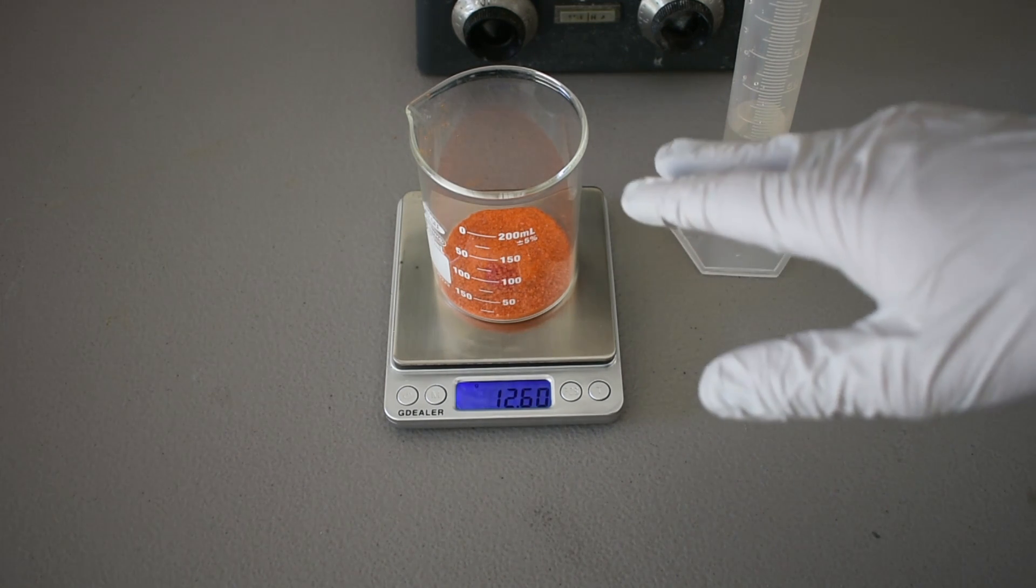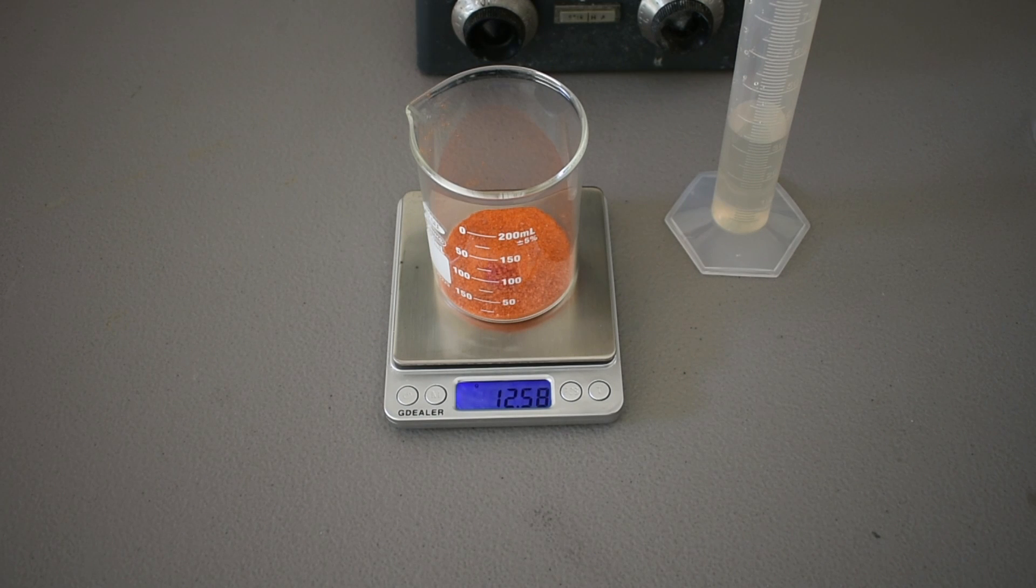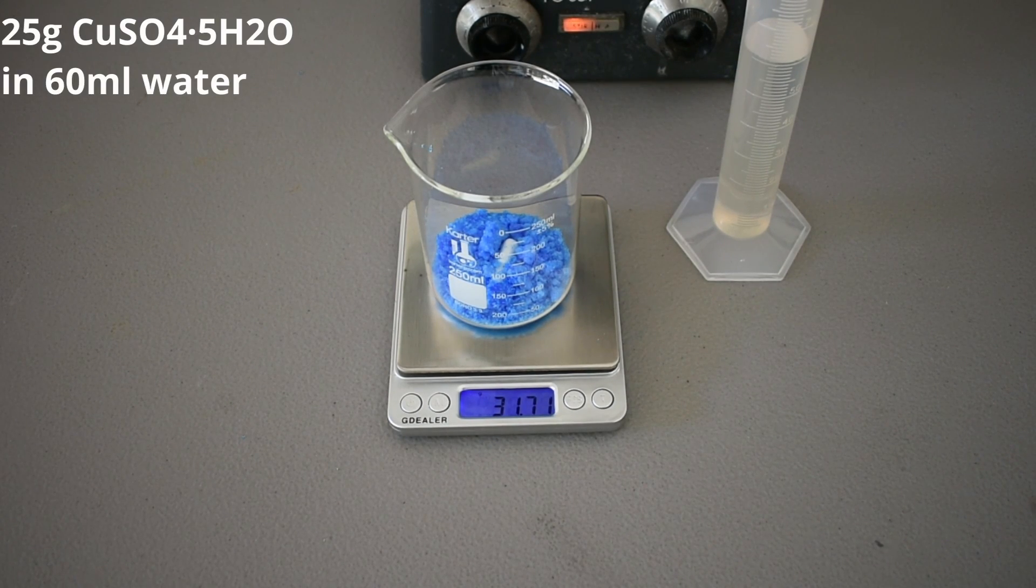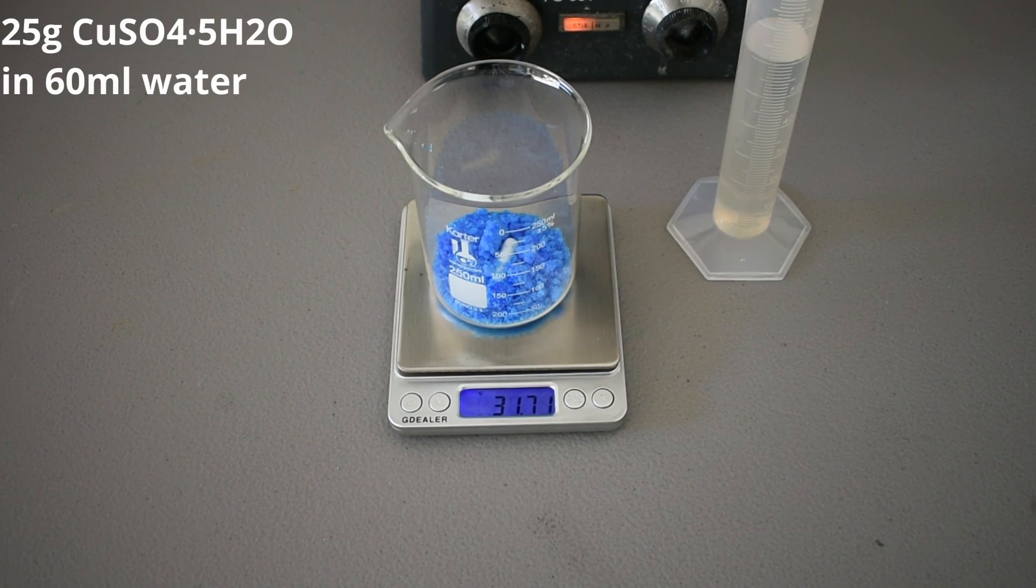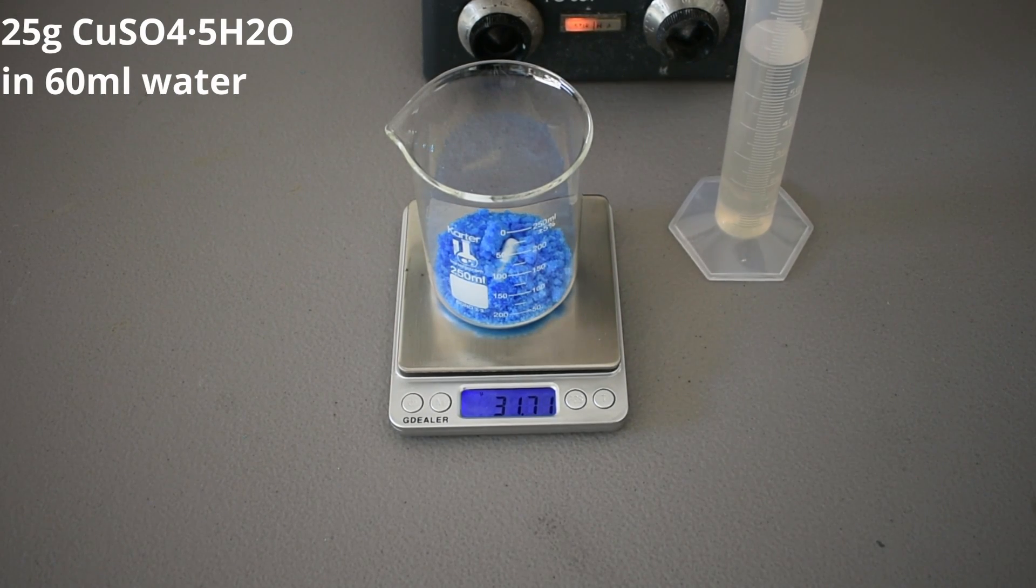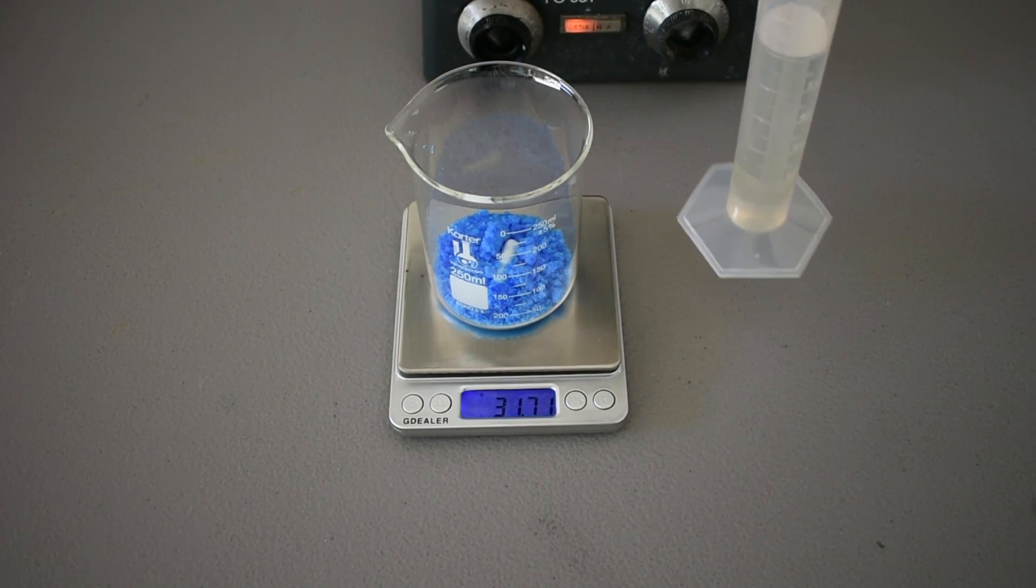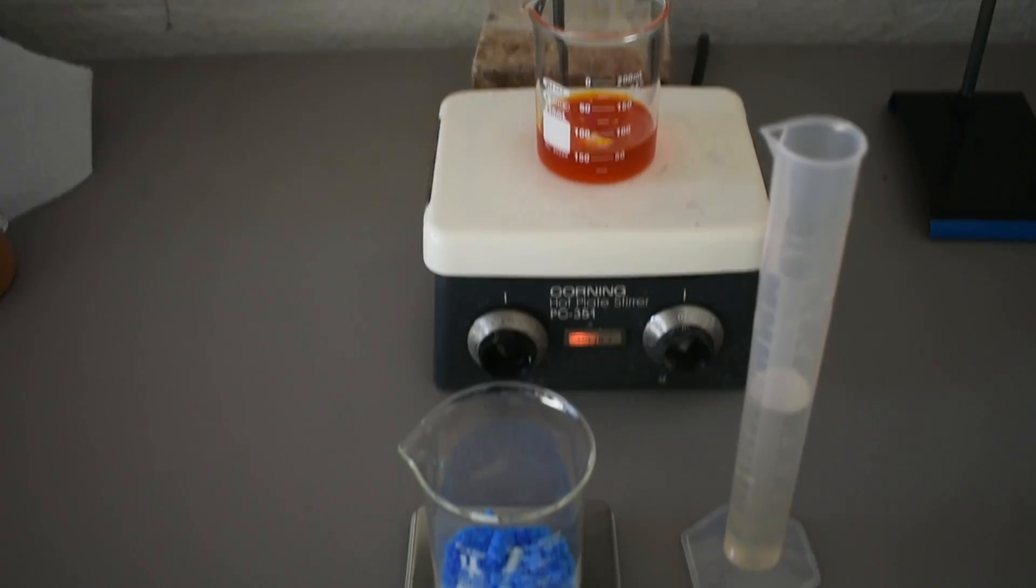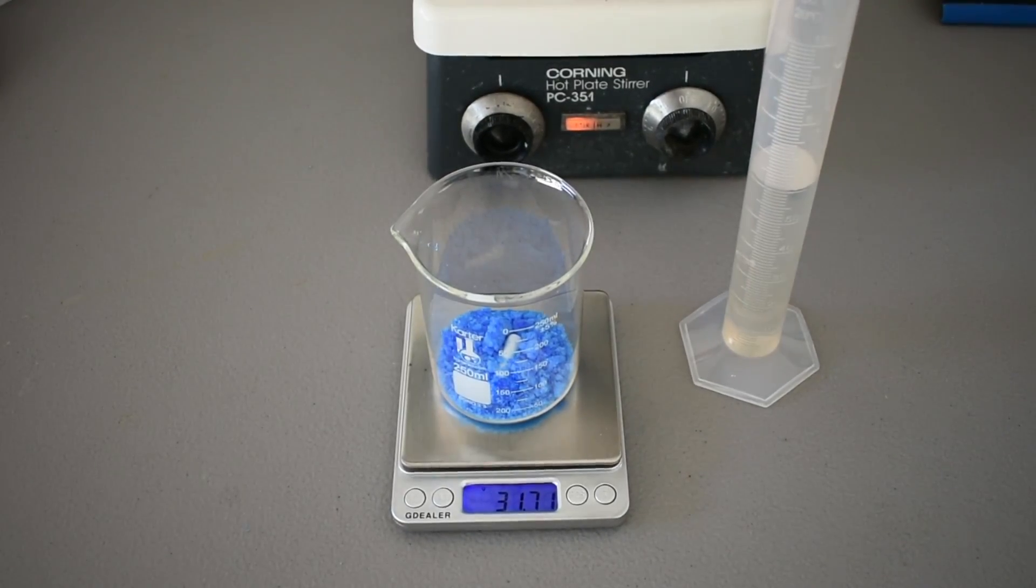So I'm going to mix up this solution, and then we're going to weigh out our copper sulfate solution and proceed from there. I've weighed out my 25 grams of copper sulfate. It says 31 because I already put the stir bar in, and then we're going to dissolve that in 60 milliliters of water. And I have the dichromate solution on the stir plate right now, and I'll come back when they're both fully dissolved.